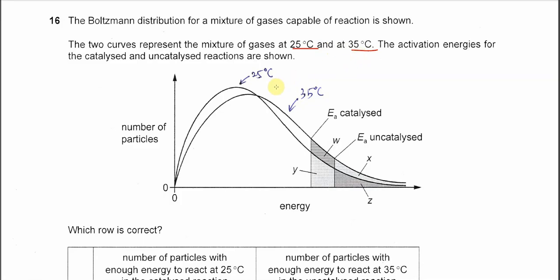The one that's higher to the left, this one, is at 25 degrees C. The one that's lower to the right is at 35 degrees C. So there are two distributions here, one at a lower temperature and another at a higher temperature. In this diagram there are two activation energies.